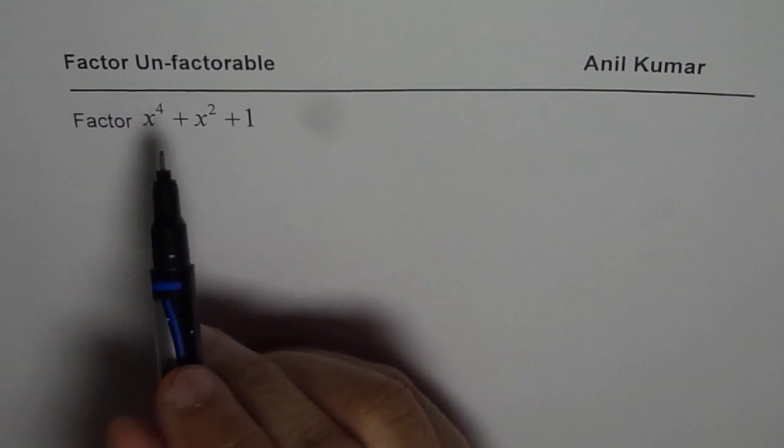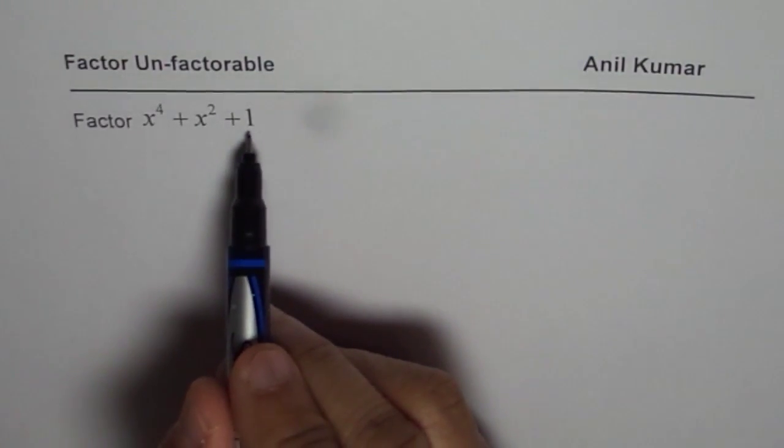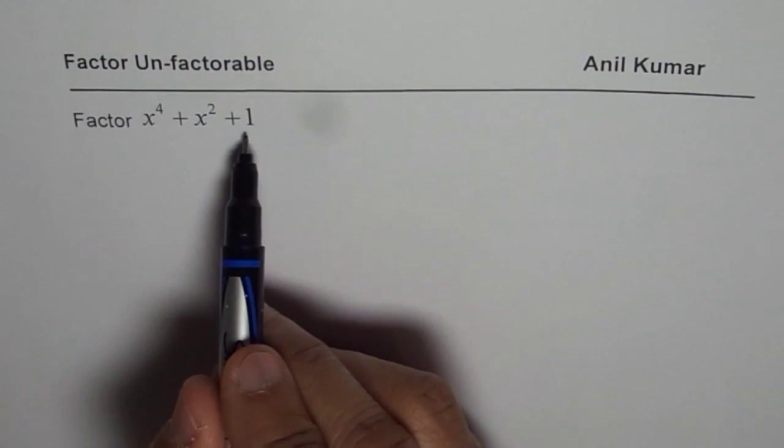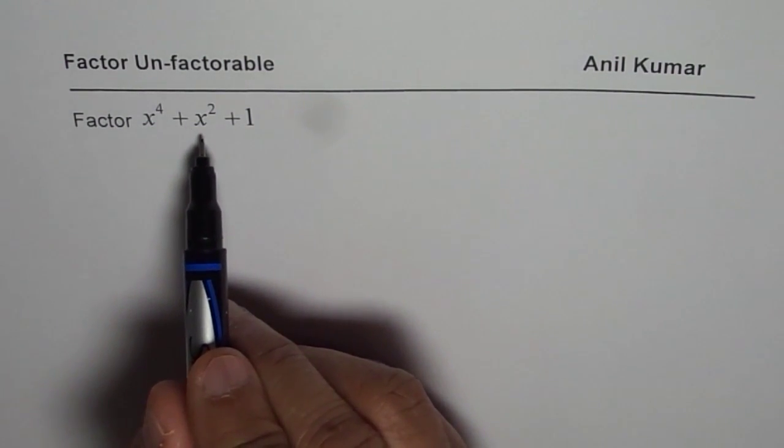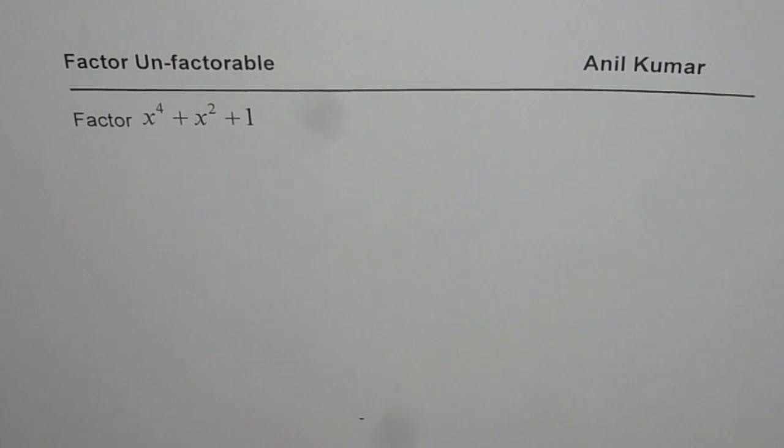Now here we have x to the power of 4 plus x square plus 1. If you apply product and sum technique, 1 is product of 1 times 1. But when you add 1 and 1, you don't get 1, you get 2. Therefore, we say that this trinomial is not factorable.